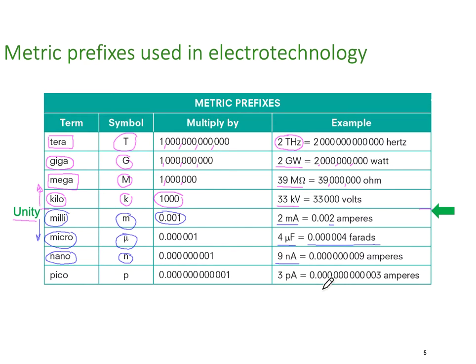And then a lowercase p we use for pico for very small, that's times 10 to the minus 12. We quite often get values in amperes down into pico amps. Much easier to say three pico amps than list off all the zeros.